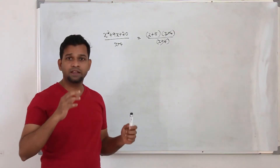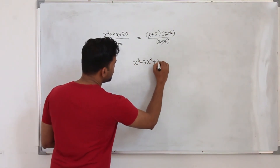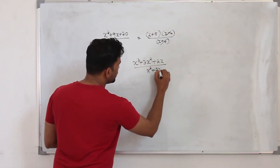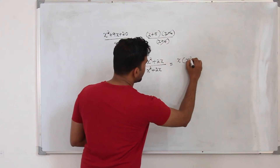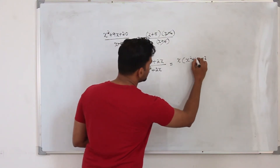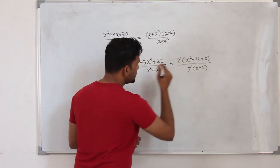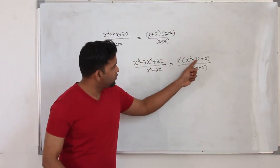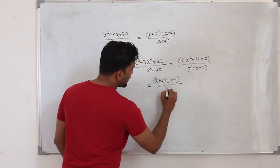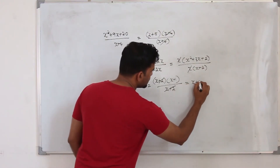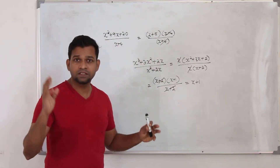Mostly the questions are like this — you need to find the common factor. Sometimes you will have something like x³+3x²+2x over x²+2x. You can take out the common factor x, so you will have x(x²+3x+2) divided by x(x+2). You can cancel the x, then factorize the quadratic expression as (x+2)(x+1) divided by (x+2), so you can cancel x+2 and your answer is x+1. That's it — you factorize and cancel, there is nothing else.